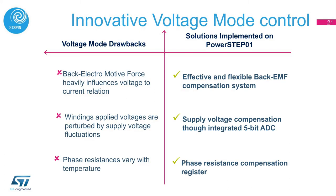Let's consider a few drawbacks of voltage mode control and how PowerStep01 solves each one. First, back EMF heavily influences the voltage-to-current relation — PowerStep01 has an effective and flexible back EMF compensation system. Secondly, winding applied voltages are perturbed by supply voltage fluctuations — PowerStep01 has supply voltage compensation through an integrated 5-bit analog-to-digital converter. Thirdly, phase resistances vary with temperature — PowerStep01 allows the use of a register to change the phase resistance using a compensation.